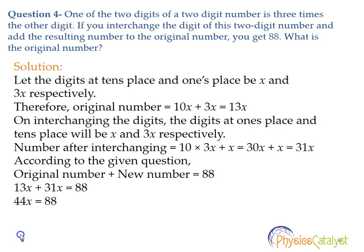The digits at ones place and tens place will be x and 3x respectively. Number after interchanging = 10 × 3x + x = 30x + x = 31x.